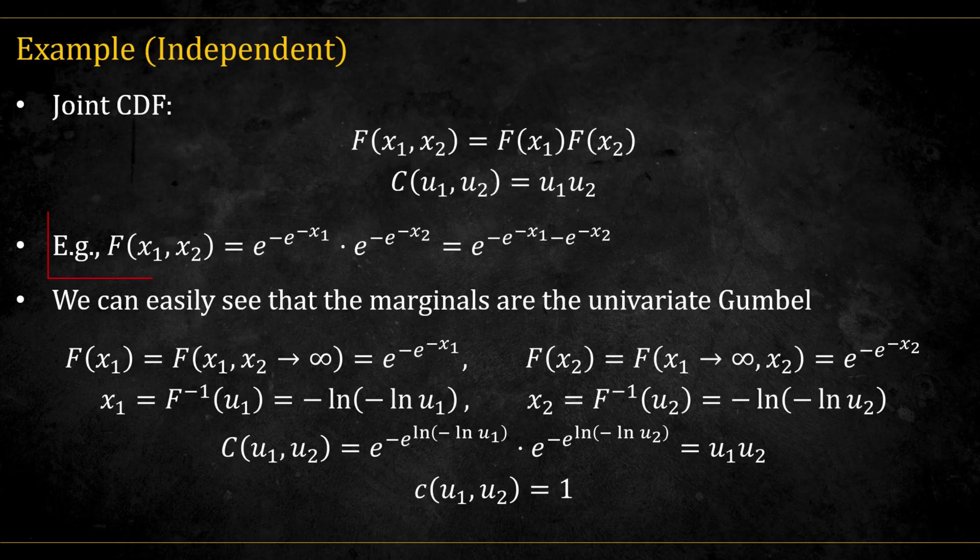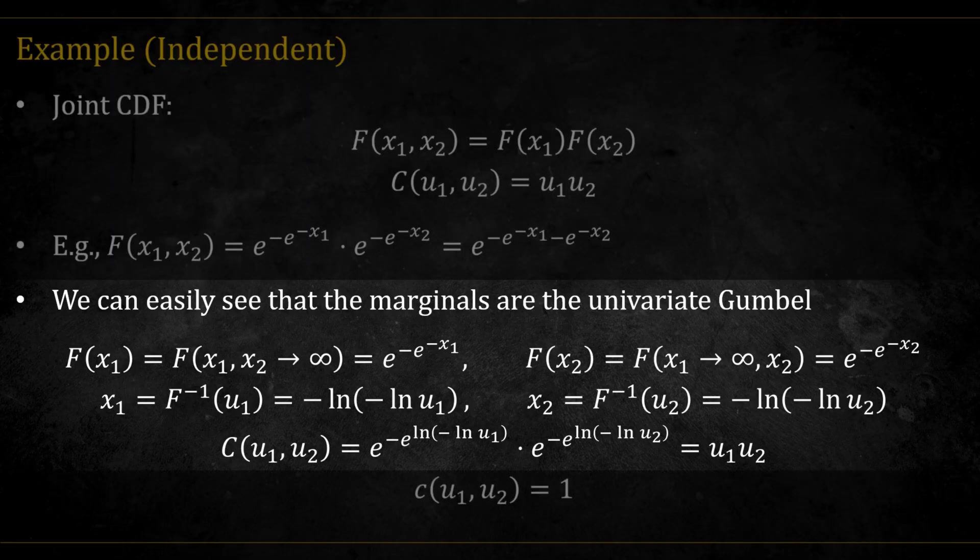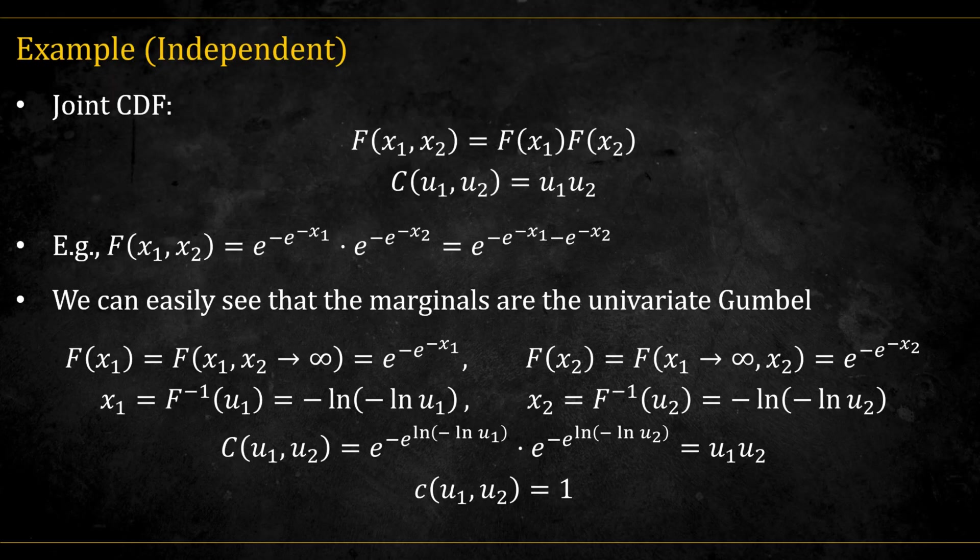For example, let's take a look at the product of standard Gumbel marginals. We can verify that the copula is indeed u1 times u2 by going through the same derivation as before. The copula density, the double derivative of this expression, is thus equal to 1.